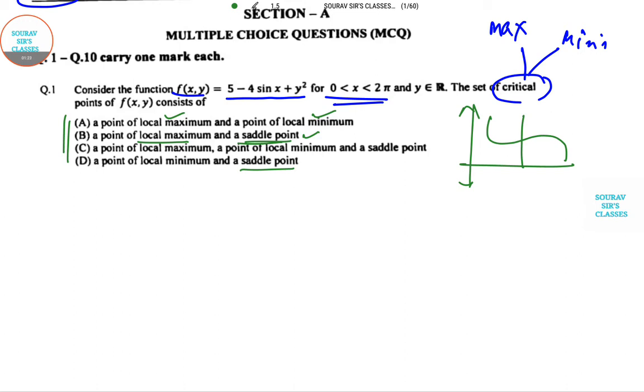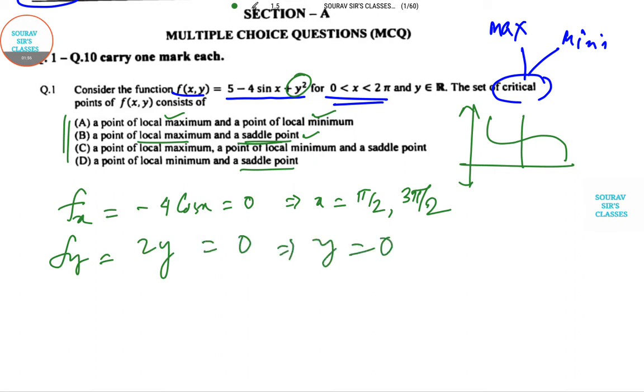For this kind of question, first we find the partial derivative fx. This gives us -4cos(x) = 0, so x = π/2 and 3π/2. Next, fy = 2y = 0, which gives y = 0. So the critical points are (π/2, 0) and (3π/2, 0).